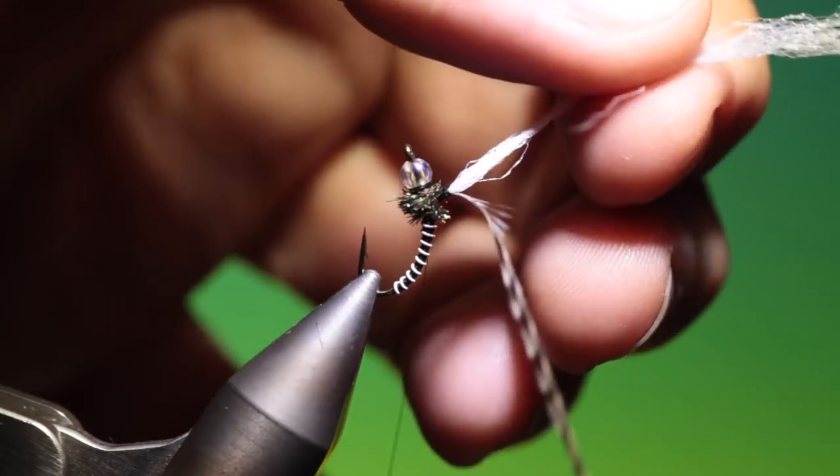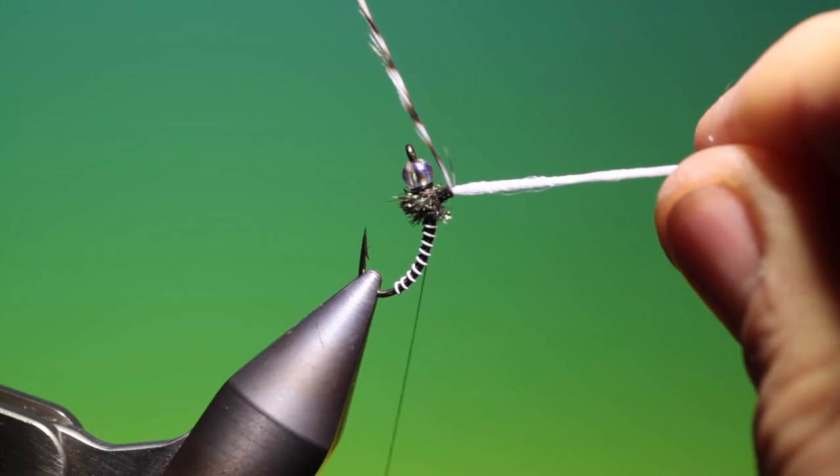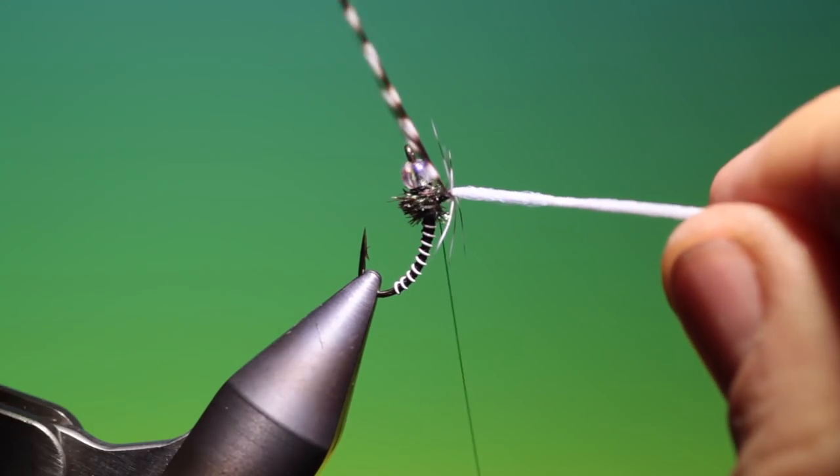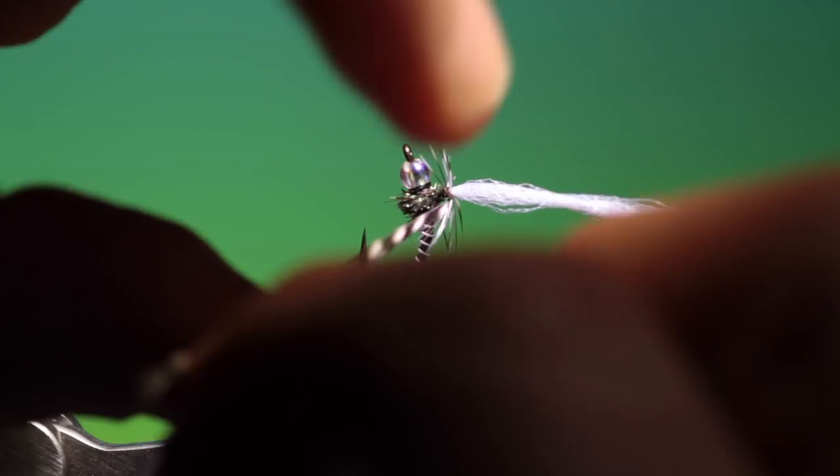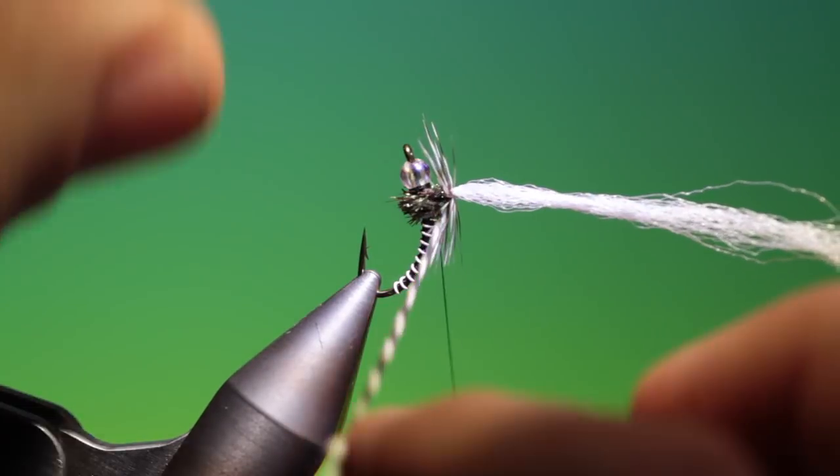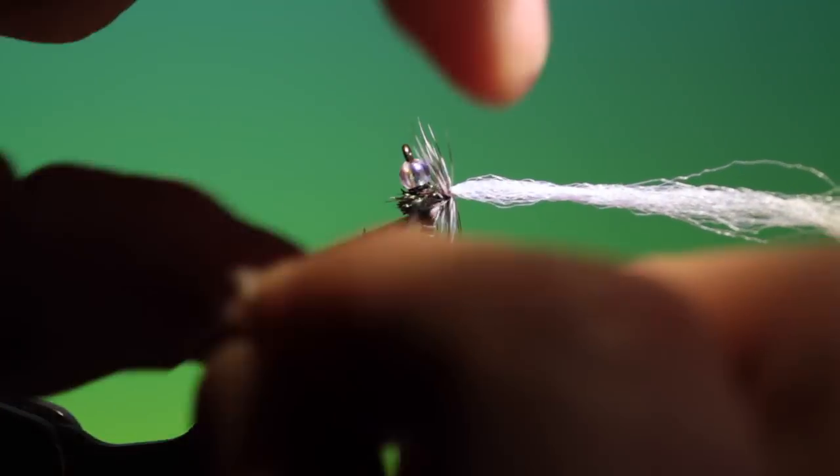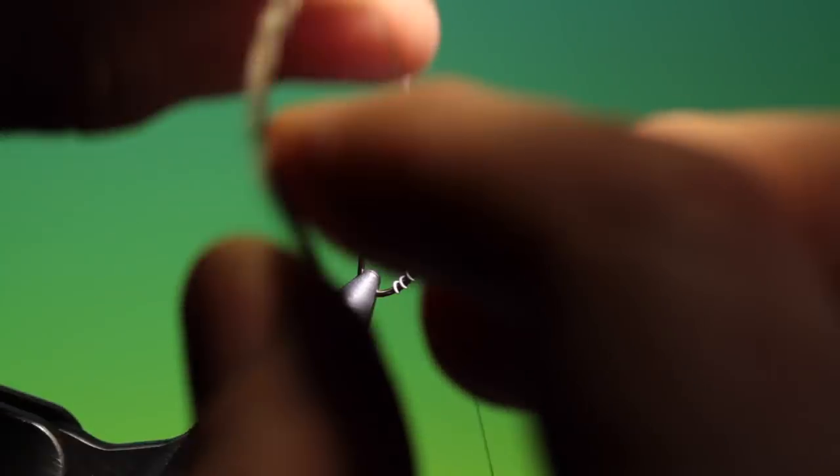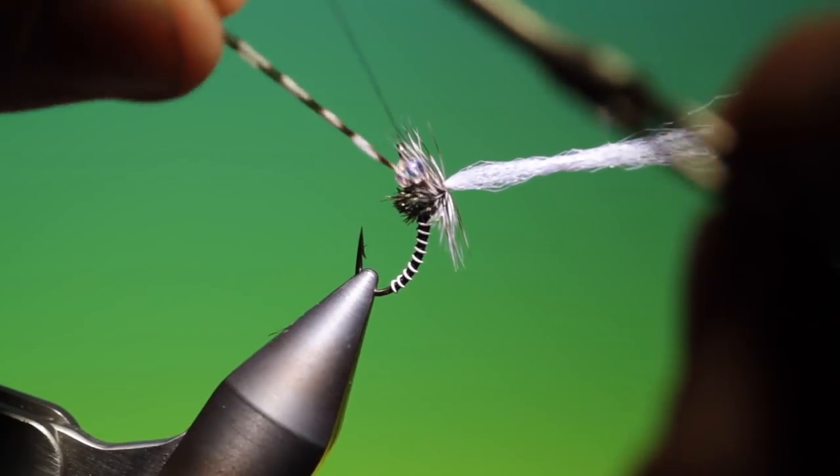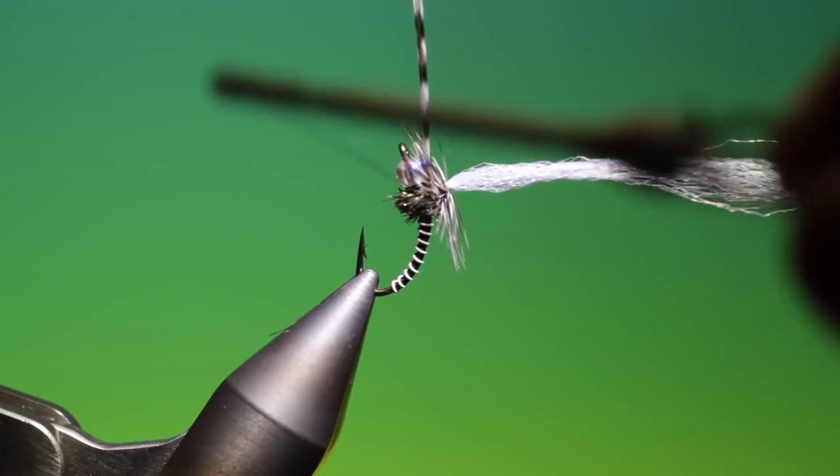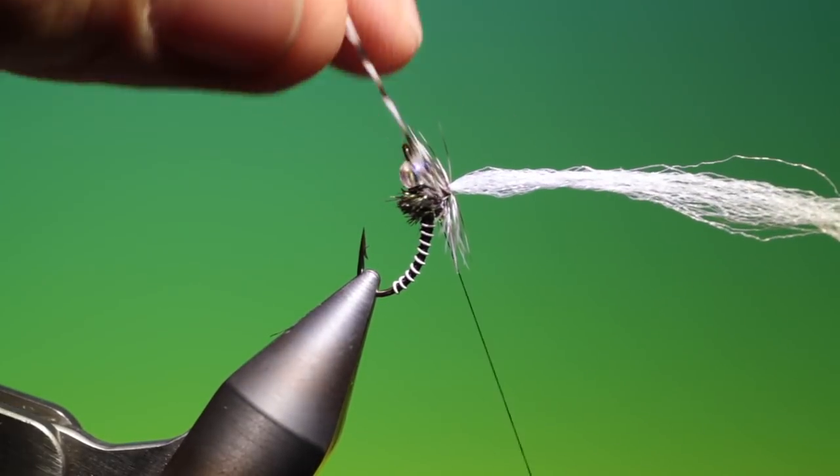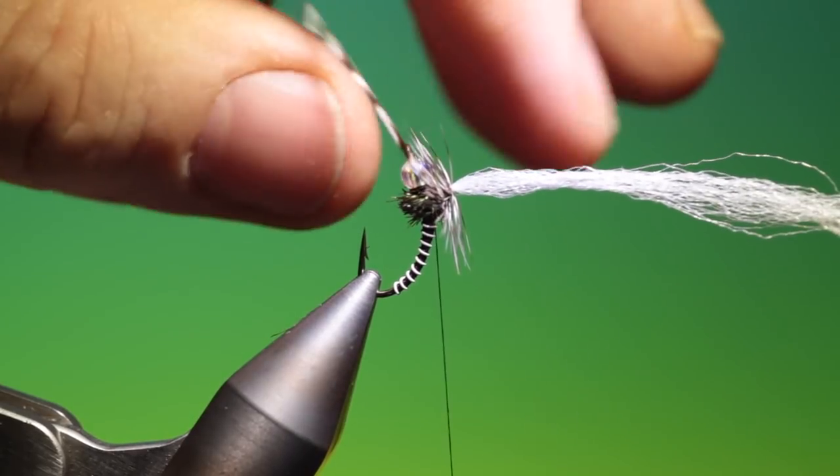Free your hackle from your post material. And then we'll wrap the hackle. Again, this can be to your own likings, whether it be sparse or dense. I like it kind of halfway. And then take care that you don't tie down any of the hackle fibers when you're tying it down. There we go.